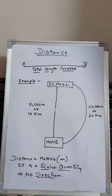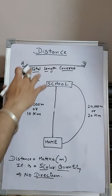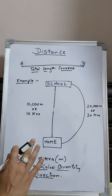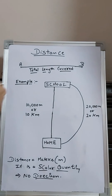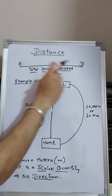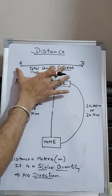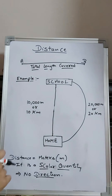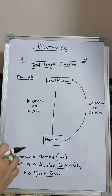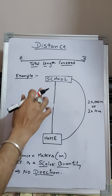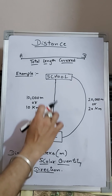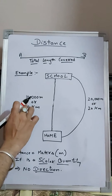Today we will discuss distance and displacement in detail. Distance is the total length covered between two points. Here is point A and point B, so the total length between these two is called distance. To understand distance, let's use an example: you have to go from home to school.